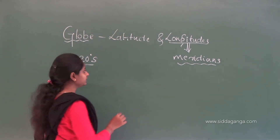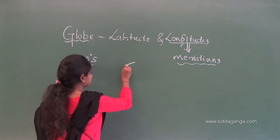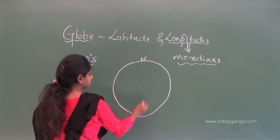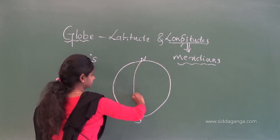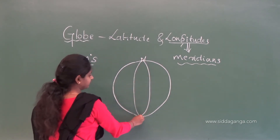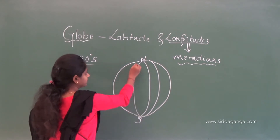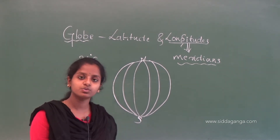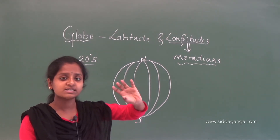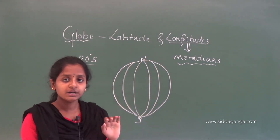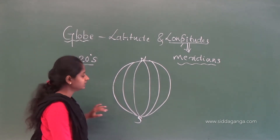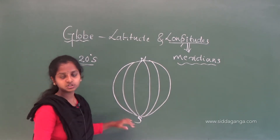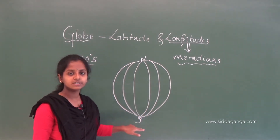Longitudes are the meridians on the Earth's surface which run from the north pole to the south pole in a semicircular manner. In the case of latitudes, the distance between all the latitudes is the same. But in meridians, the distance will be different — it decreases while reaching the poles.